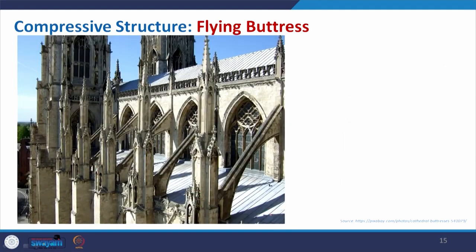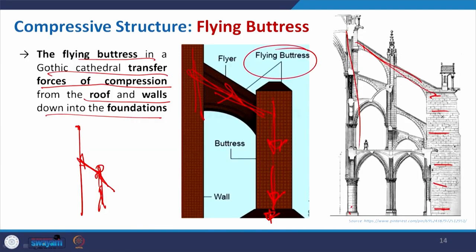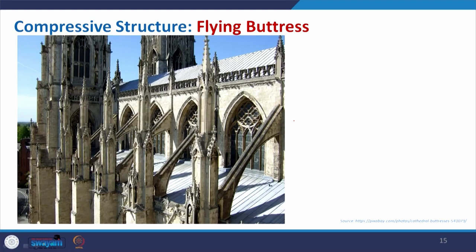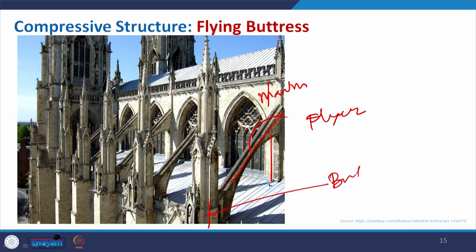In this example showing an actual cathedral, you can see the main structure and then the flyer connected to the buttress — showing how it supports the building. The building materials used are either stone blocks or bricks laid in mortar — masonry was the technique. They placed bricks one by one in the mortar bed to create this kind of structure.